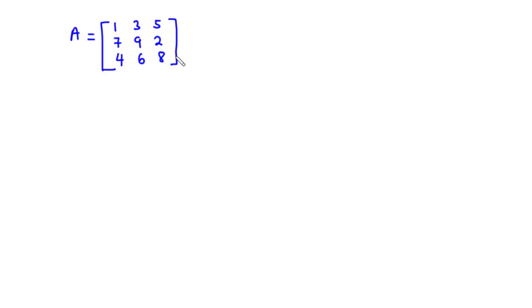So how do we find the trace of this matrix? Now the trace of matrix A which is denoted as tr(A) is giving us the sum of the elements in the leading diagonal. So considering the elements in the leading diagonal, we have 1, 9 and then 8.